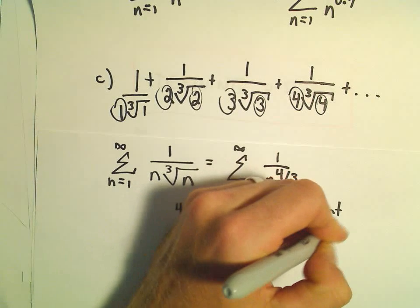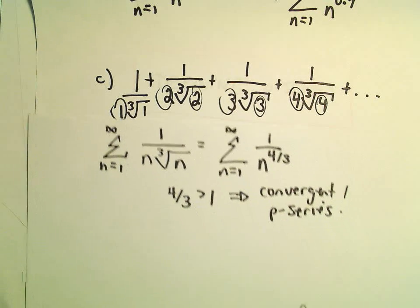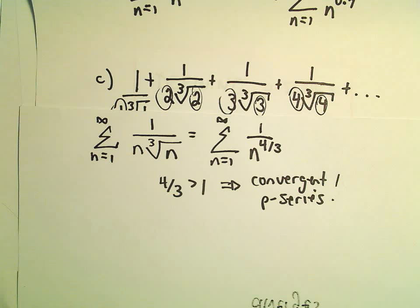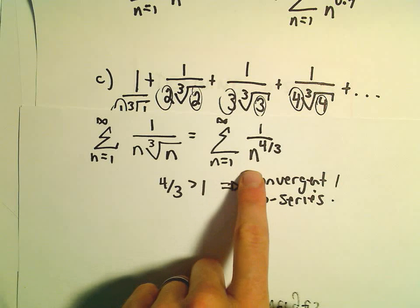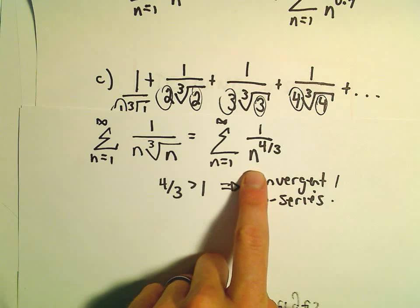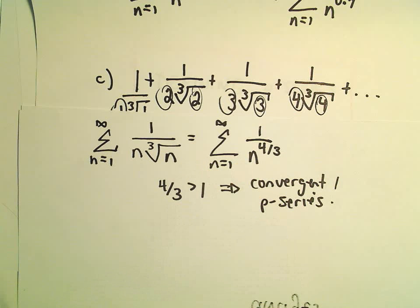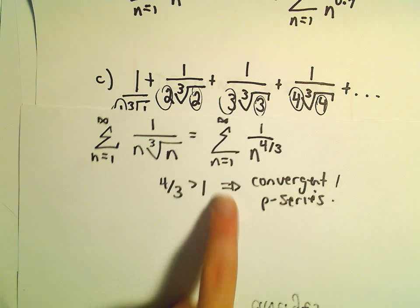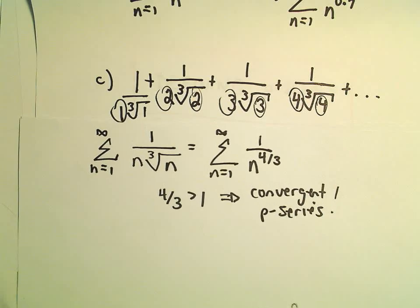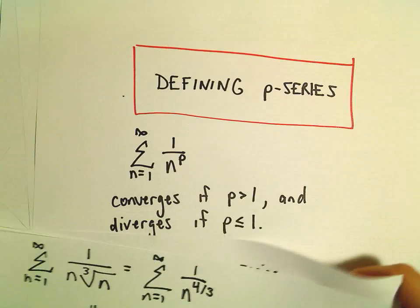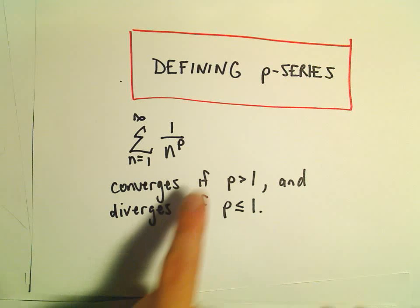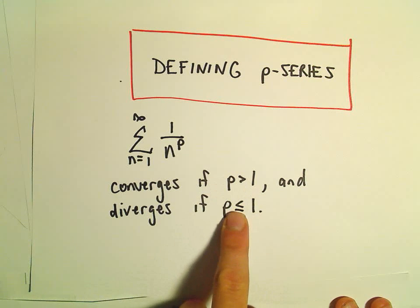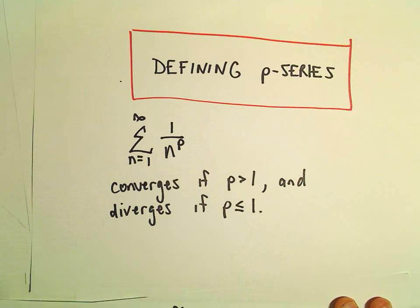P-series are super useful because soon we're going to start talking about the direct comparison and limit comparison tests, where you use p-series a lot. You can use p-series to justify whether or not other series converge or diverge. Just make sure you commit this little rule to memory — or at least know that it comes from the integral test.